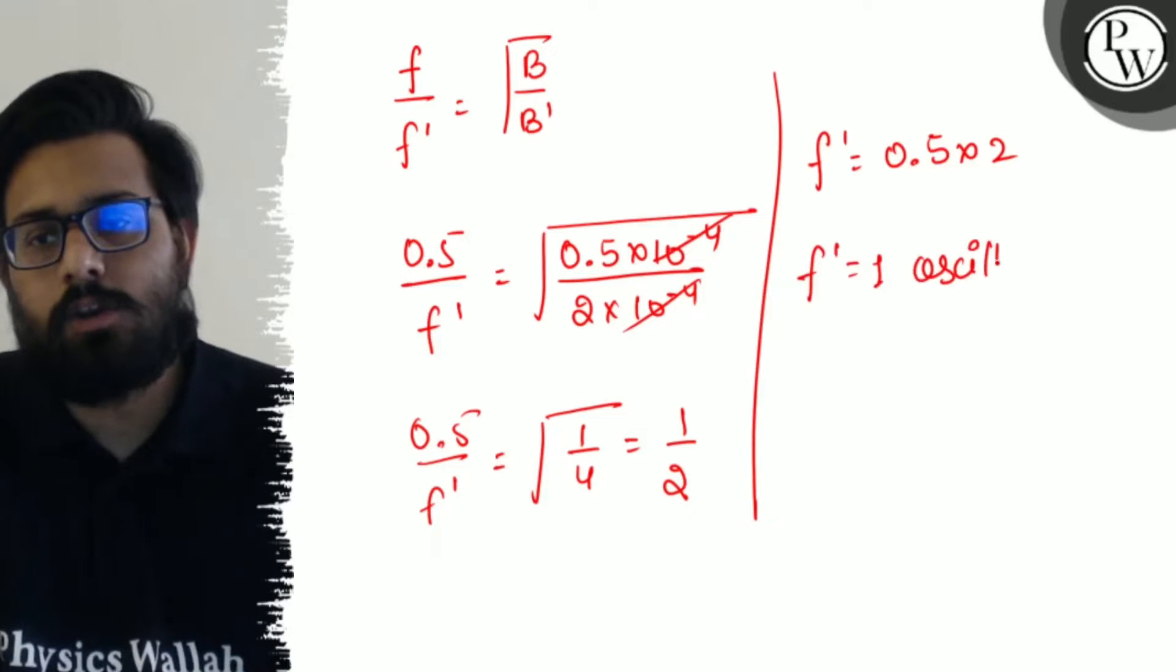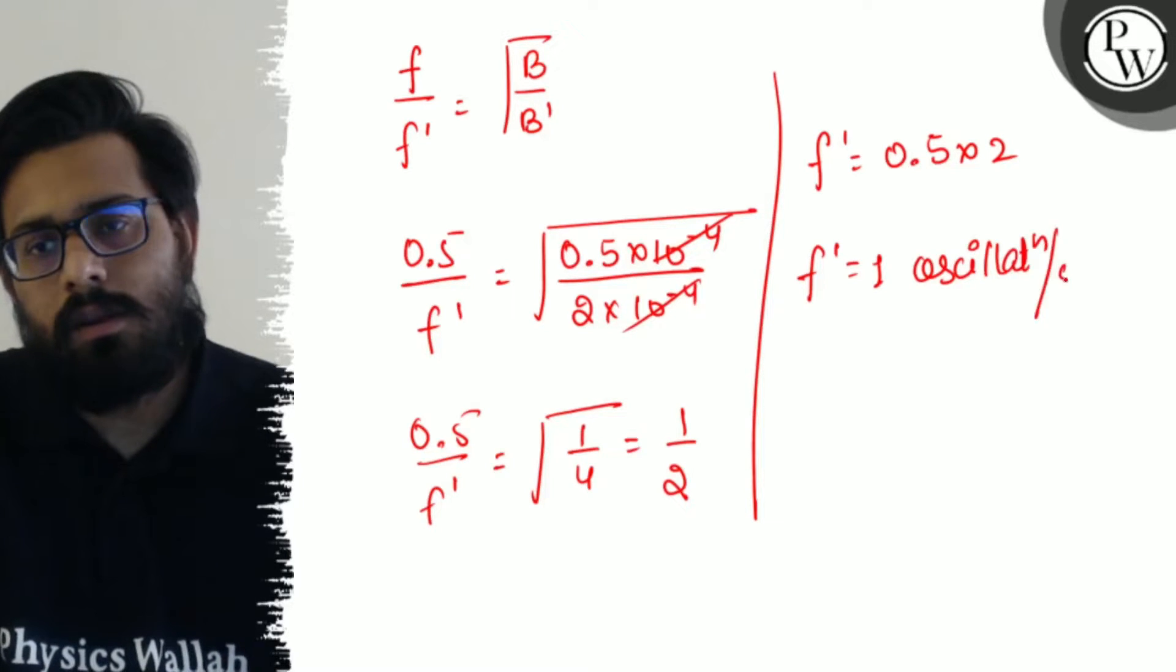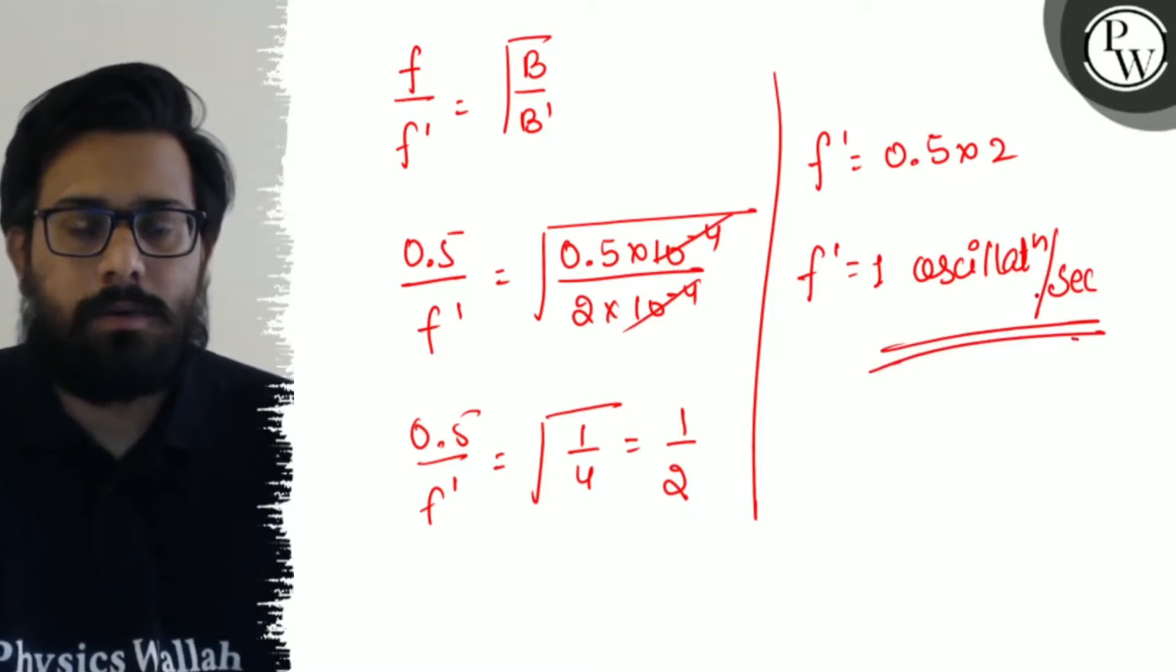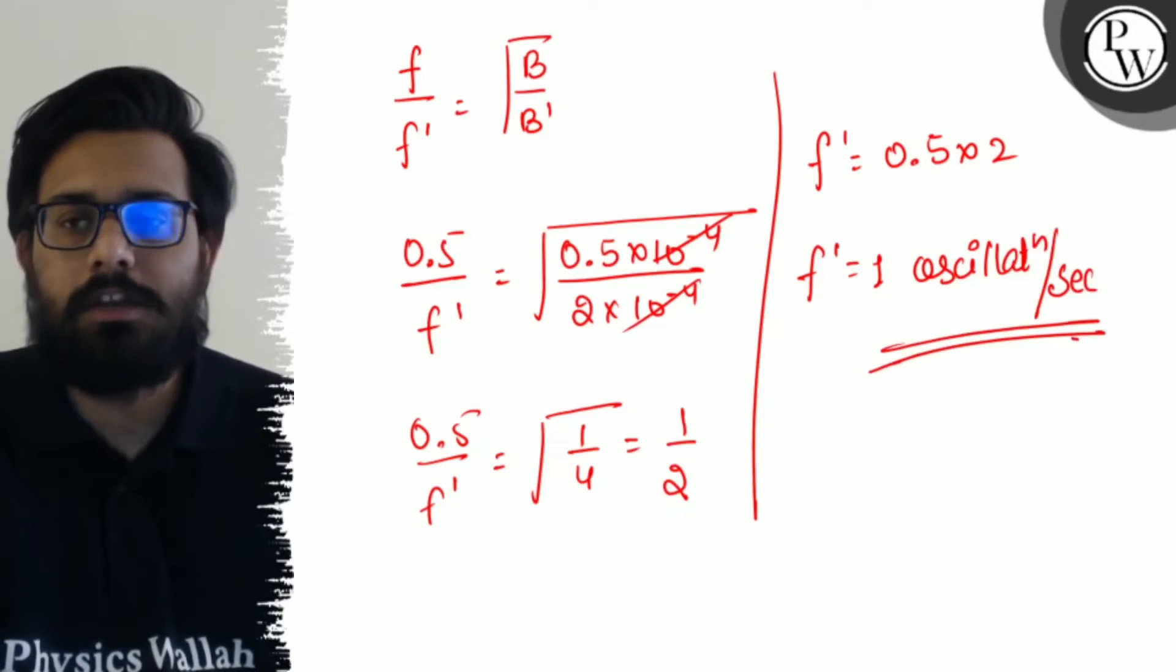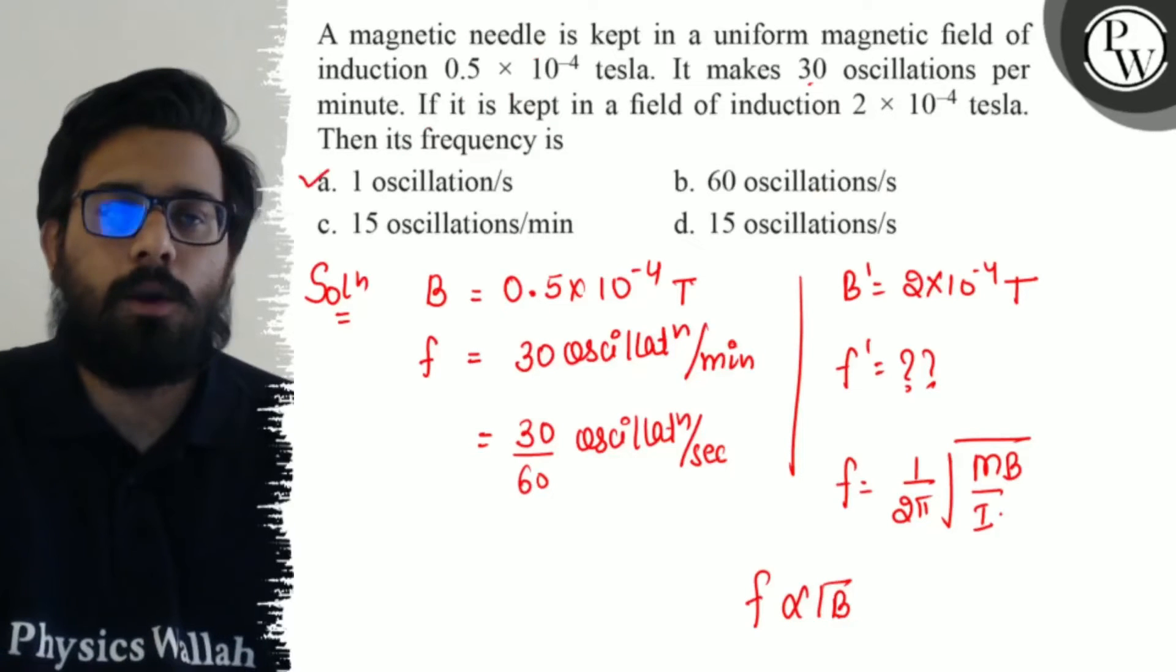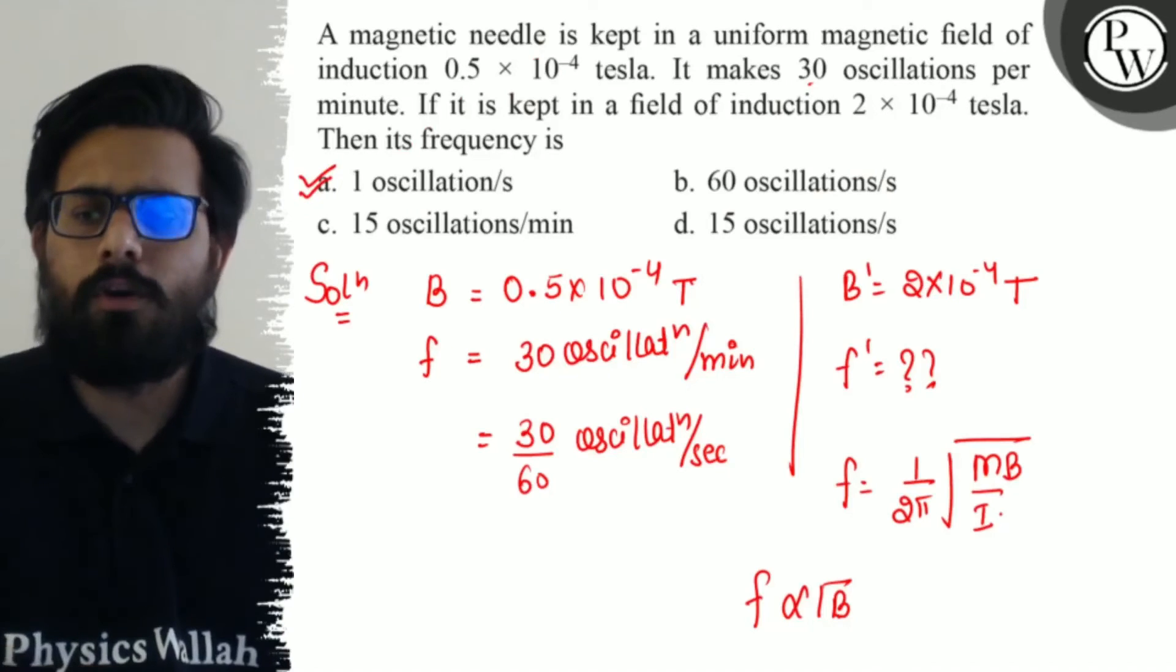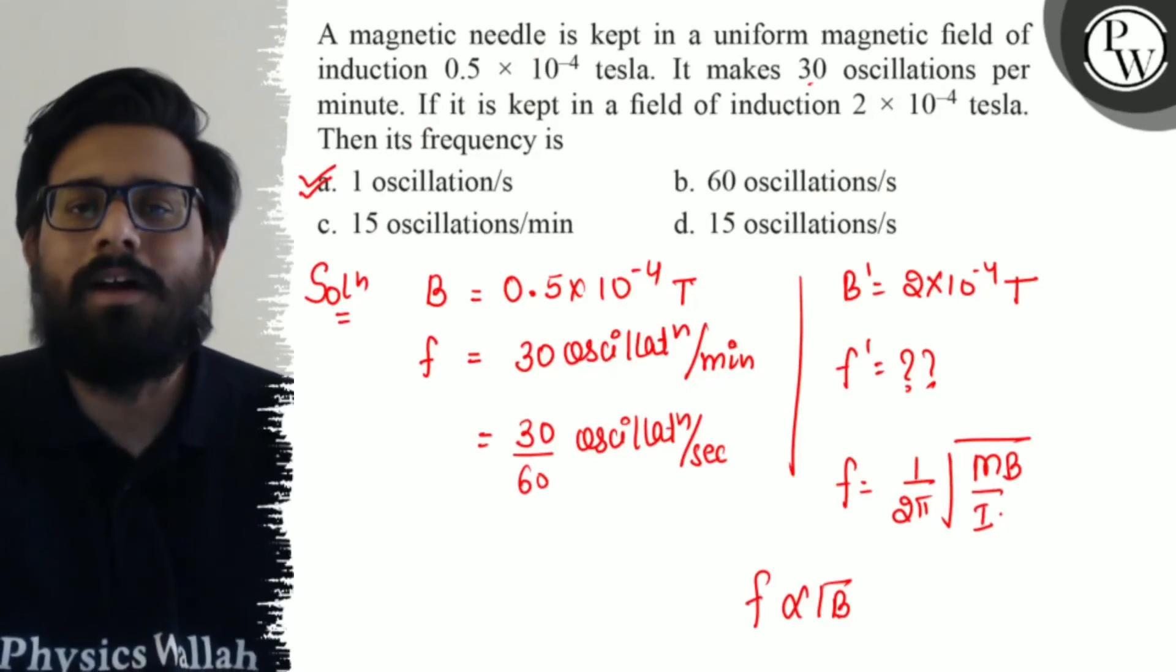The new frequency comes out to be 1 oscillation per second. We had already converted oscillations to per second, so your final answer is 1 oscillation per second, which you will get in option A. Hence your option A is absolutely correct. So I hope you got the concept of this question. All the very best.